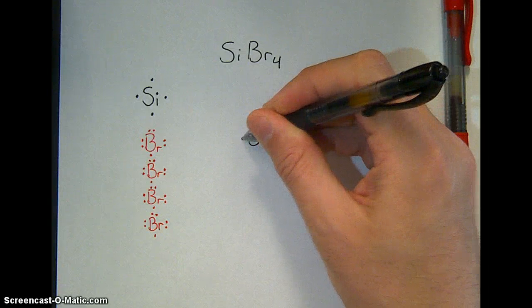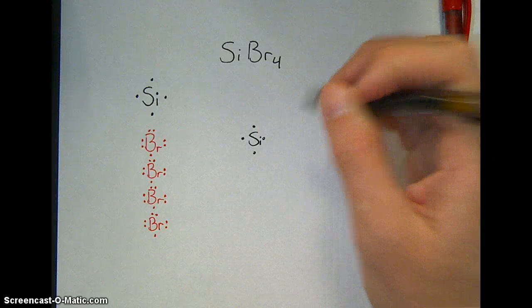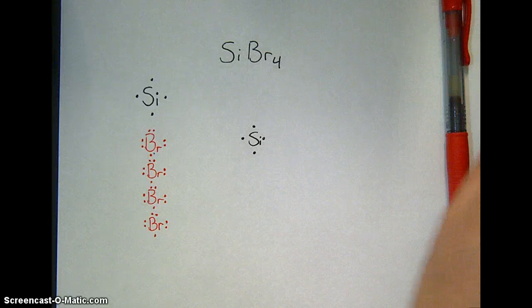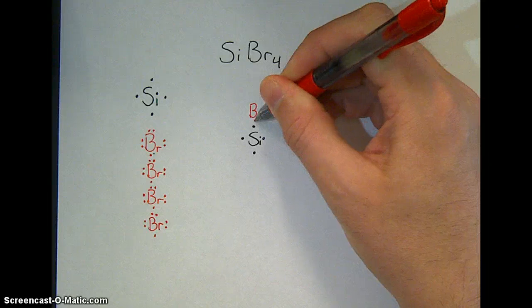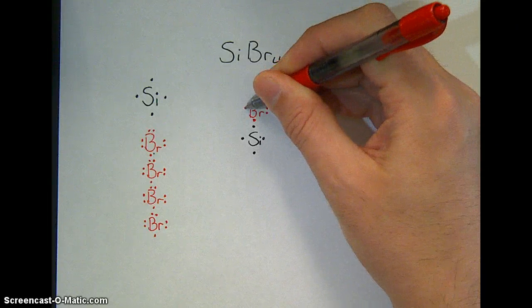A bonding site is one single electron. It's a place where it could share. Each bromine only has one single electron. It's only one bonding site for bromine. But that does mean that I can put a bromine right here to share its single electron as part of a shared pair, or a covalent bond.